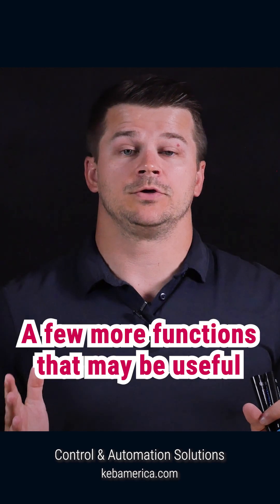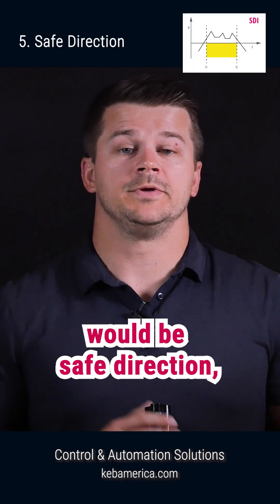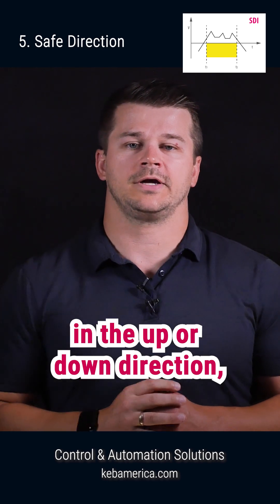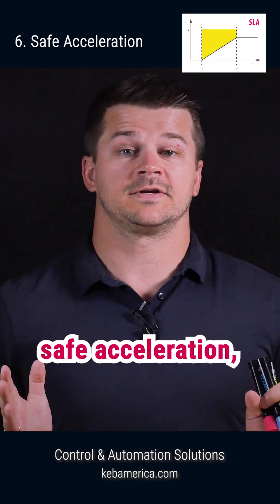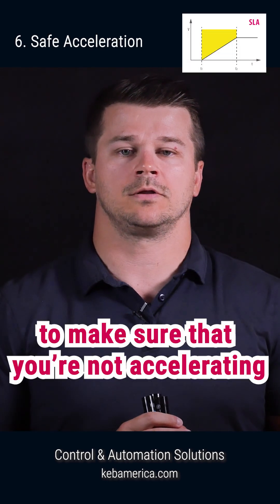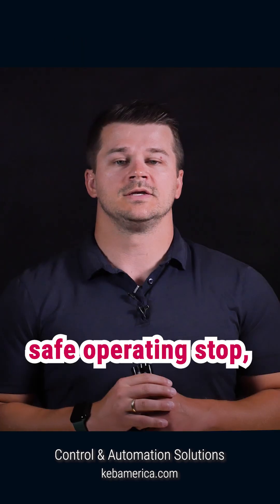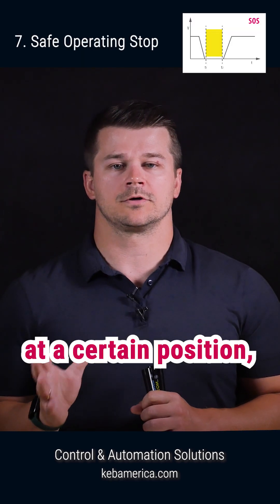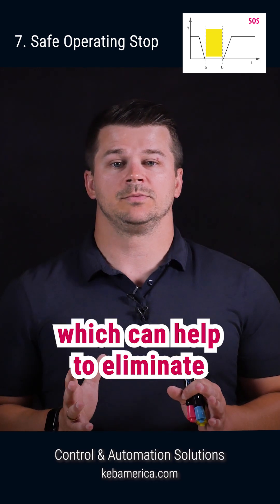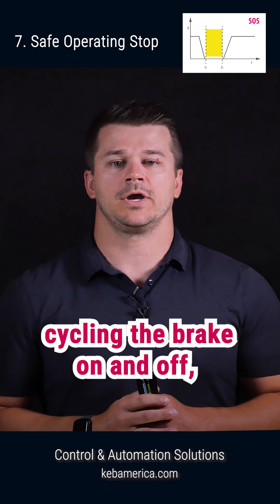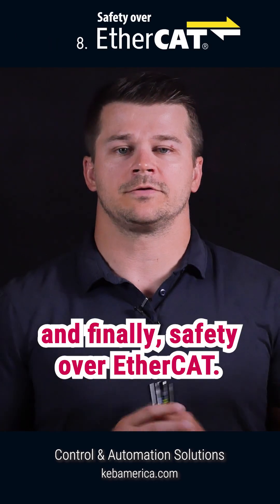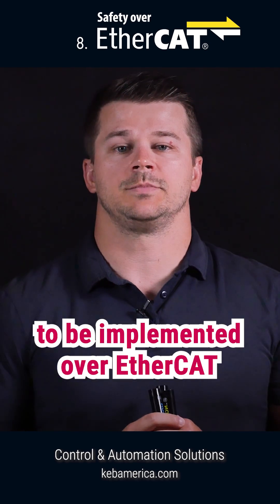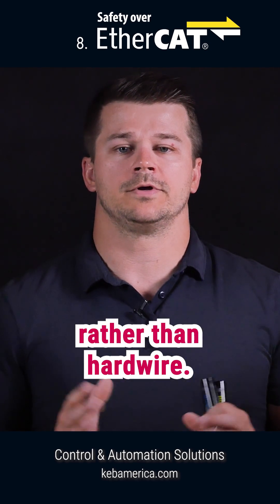A few more functions that may be useful: Safe Direction, to ensure that you're safely only traveling in the up or down direction; Safe Acceleration, to make sure that you're not accelerating too fast or too slow; Safe Operating Stop, where the drive holds the motor at a certain position, which can help to eliminate cycling the brake on and off; and finally, Safety over EtherCAT, which allows any of these safety functions to be implemented over EtherCAT rather than hardwire.